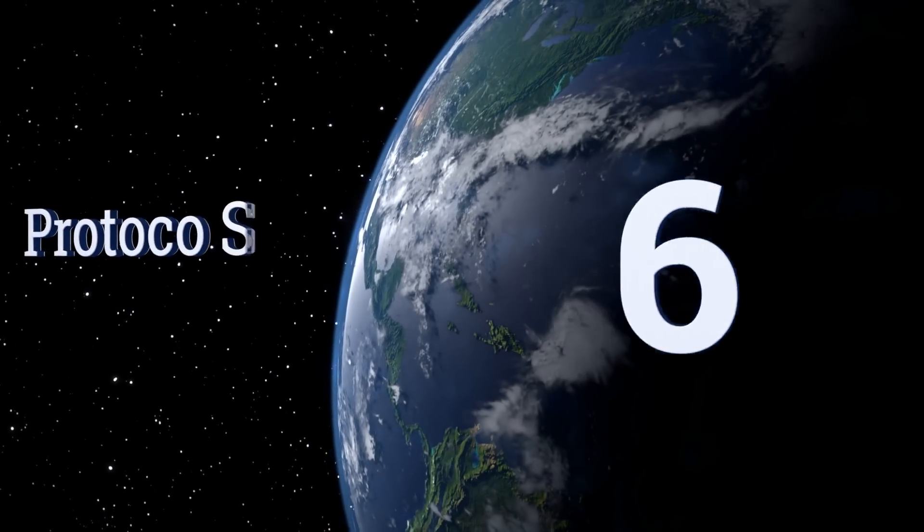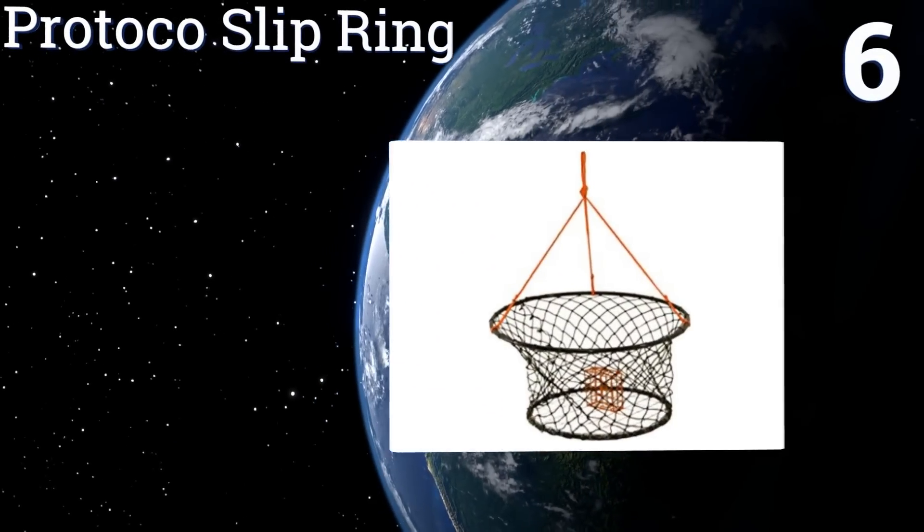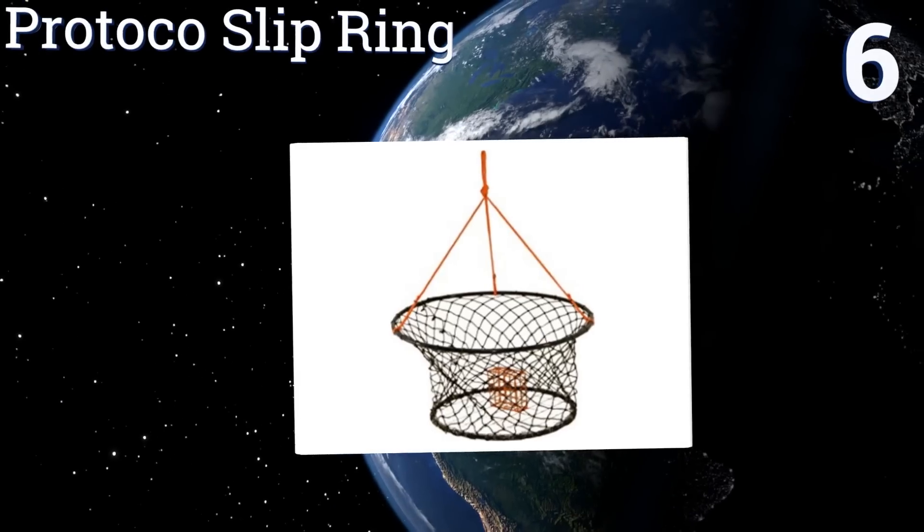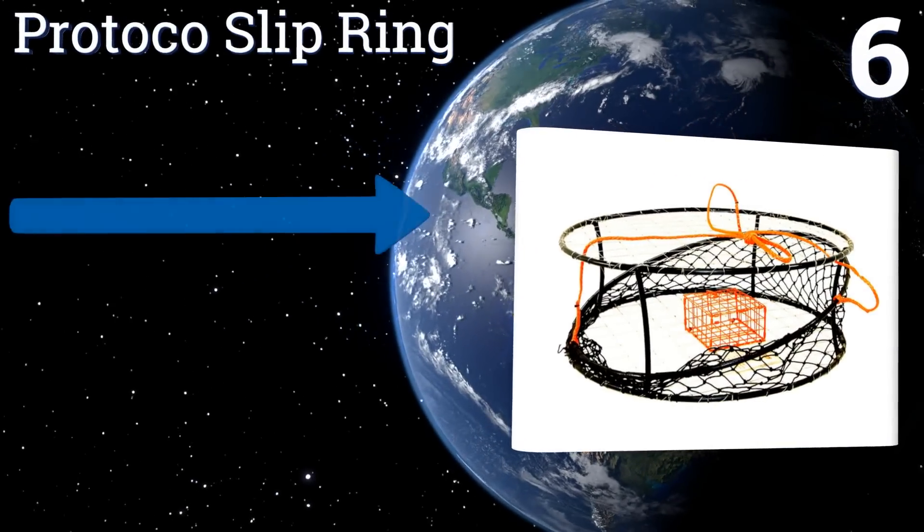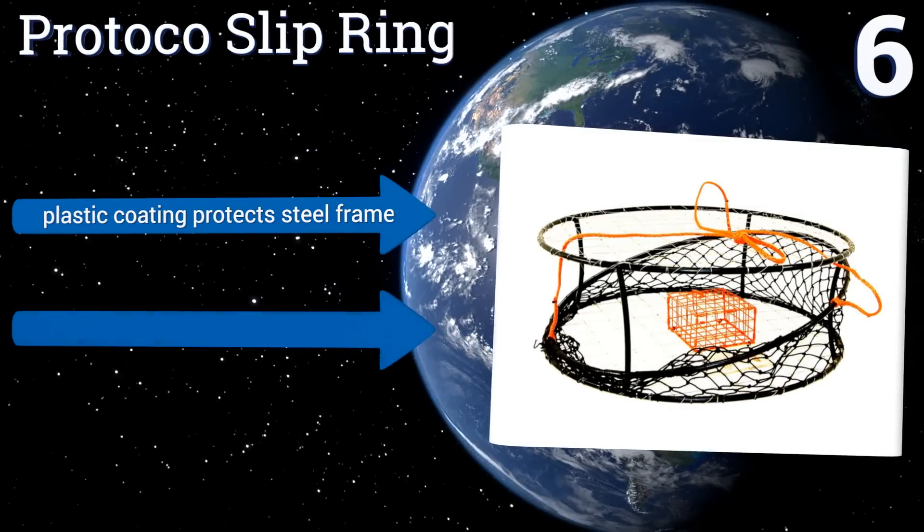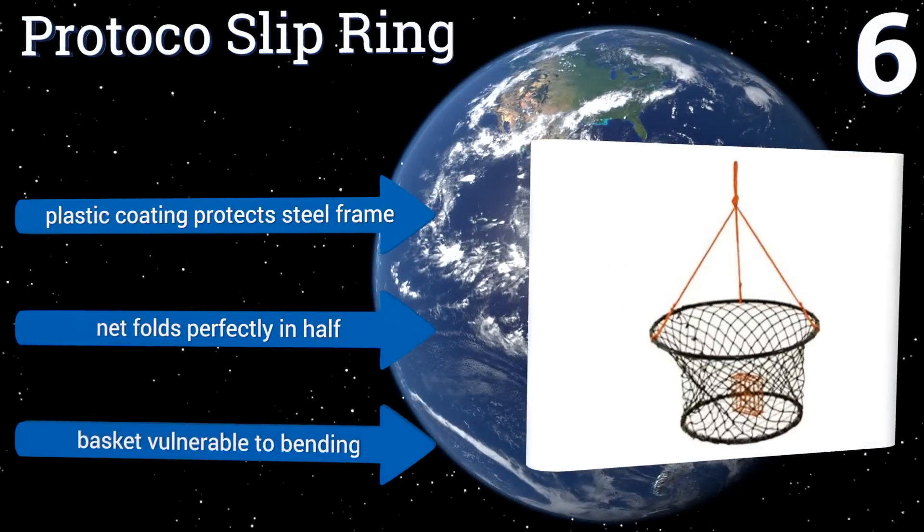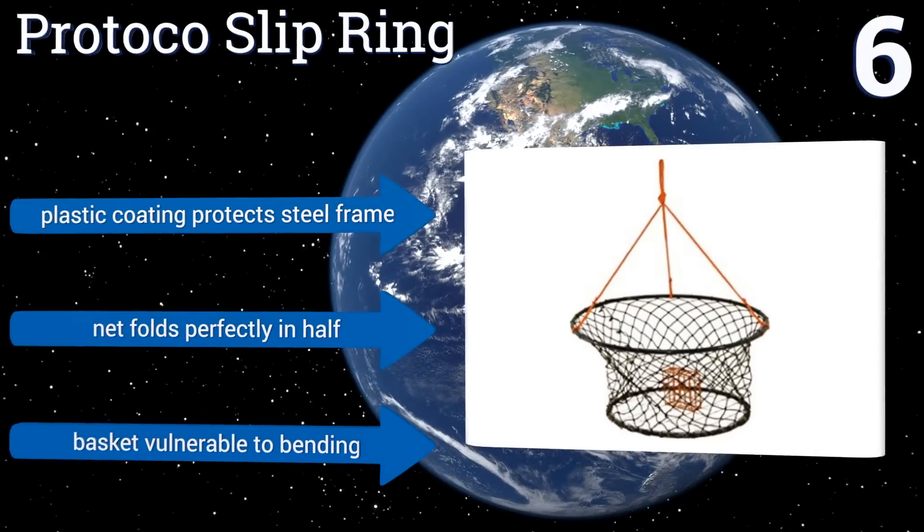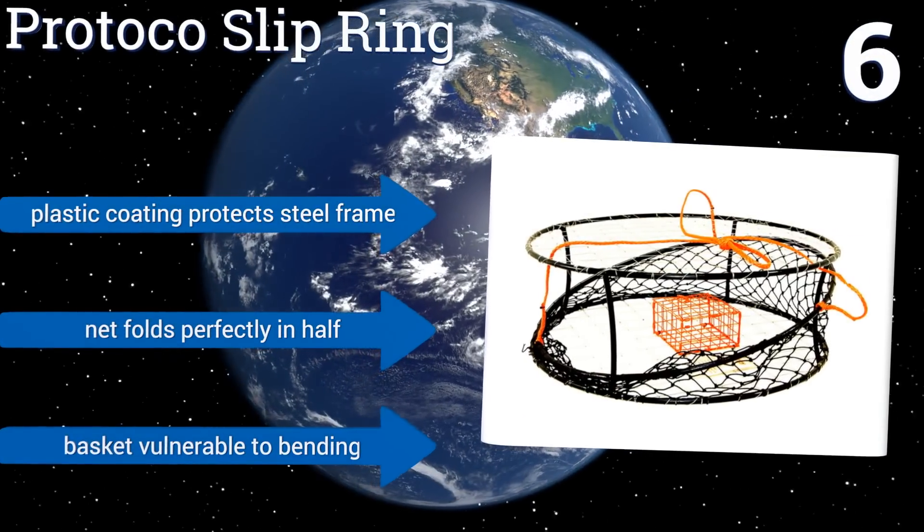Moving up our list to number six, the Pro Toko slip ring is perfect if you're tired of traditional traps, as it pairs the effectiveness of an open ring with the ruggedness of a closed pot. The taut mesh won't rot, so it'll last a long time. Indeed, the bait box is a little on the small side unfortunately. A plastic coating protects the steel frame and the net folds perfectly in half, however the basket is vulnerable to bending.